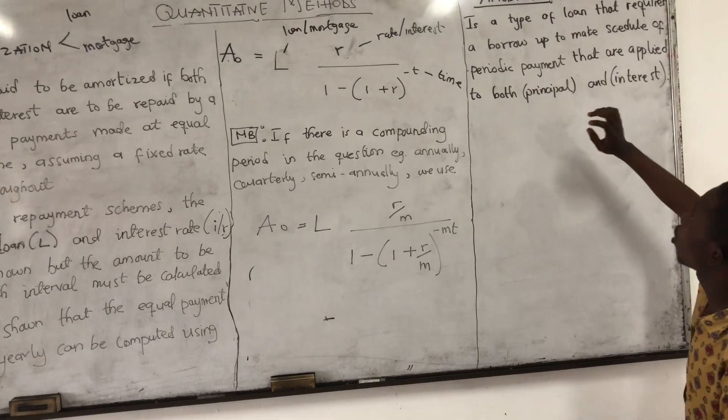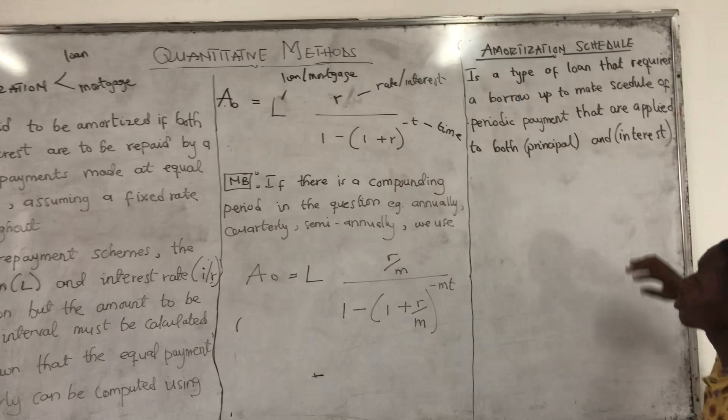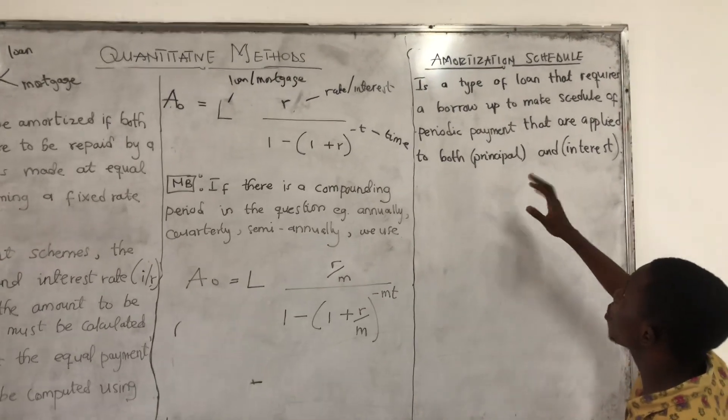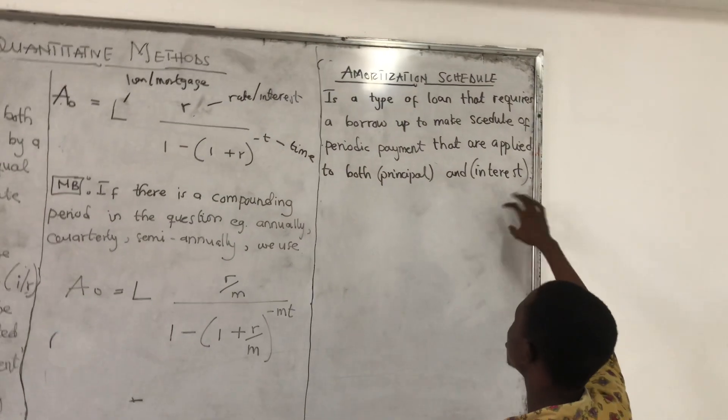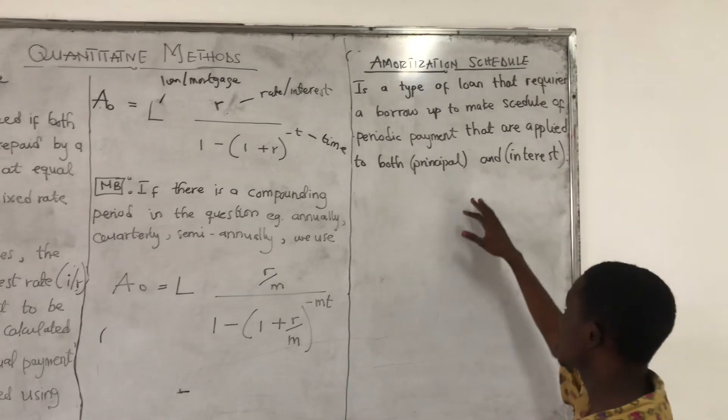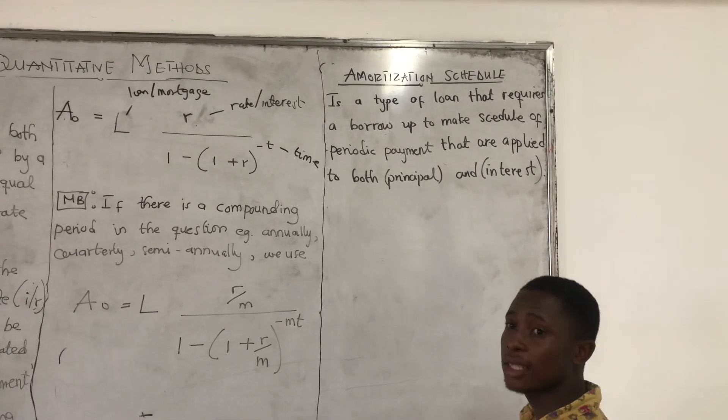Now, we have what we call the amortization schedule. It's a type of loan that requires a borrower to make scheduled periodic payments that are applied to both the principal and the interest.